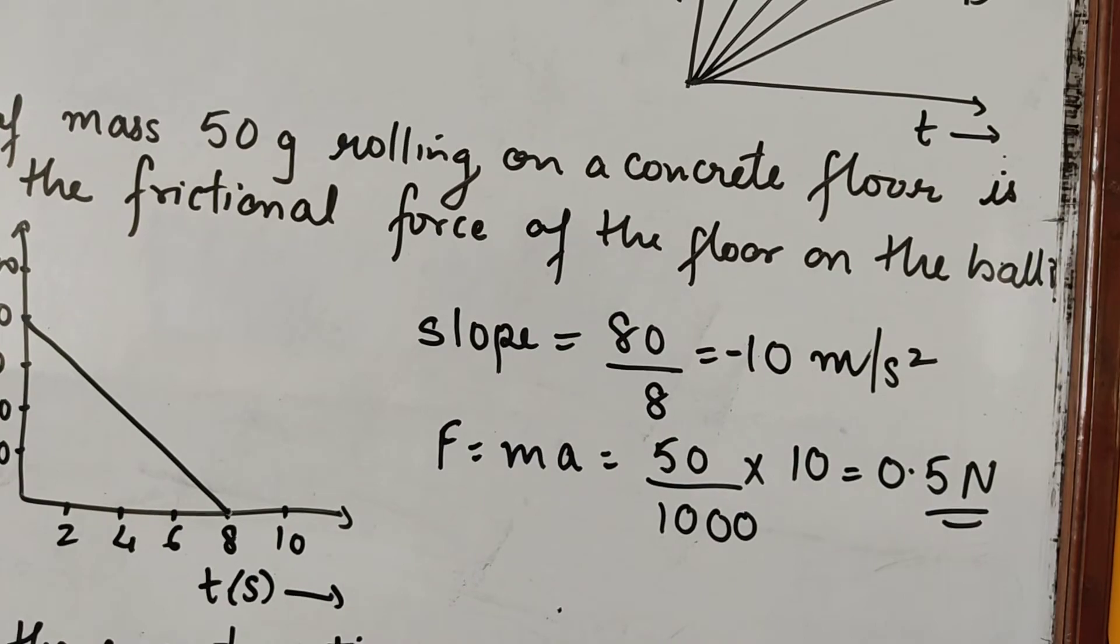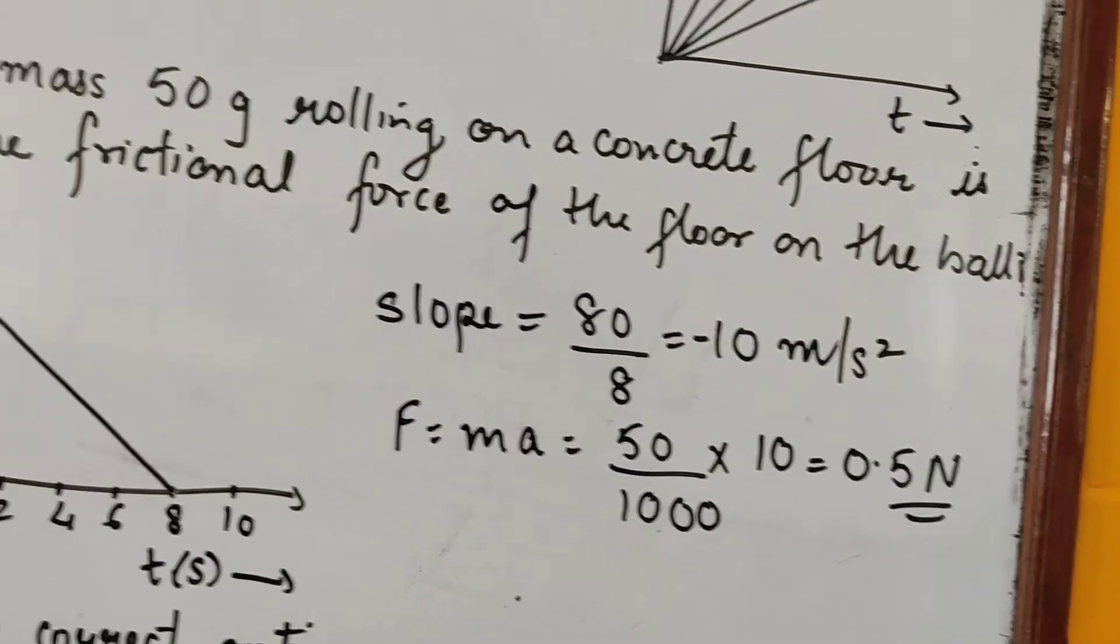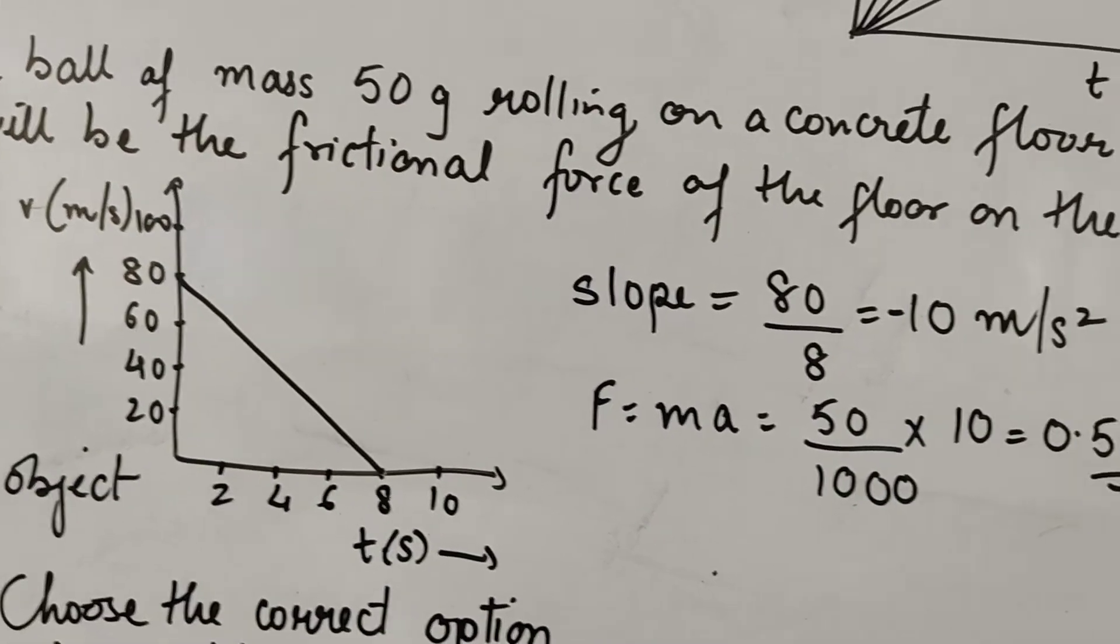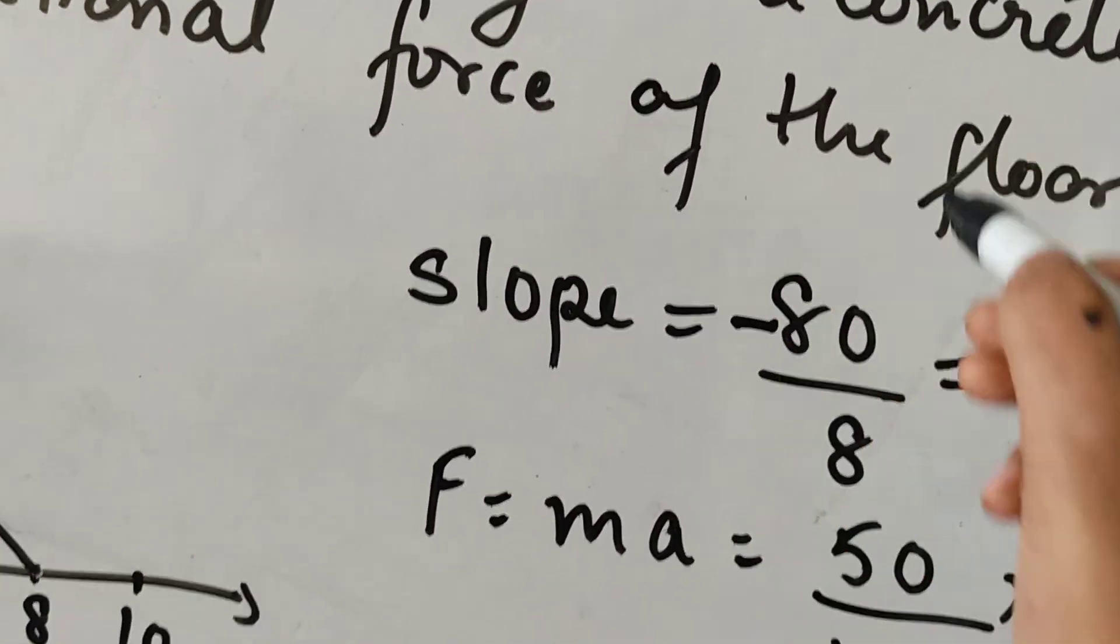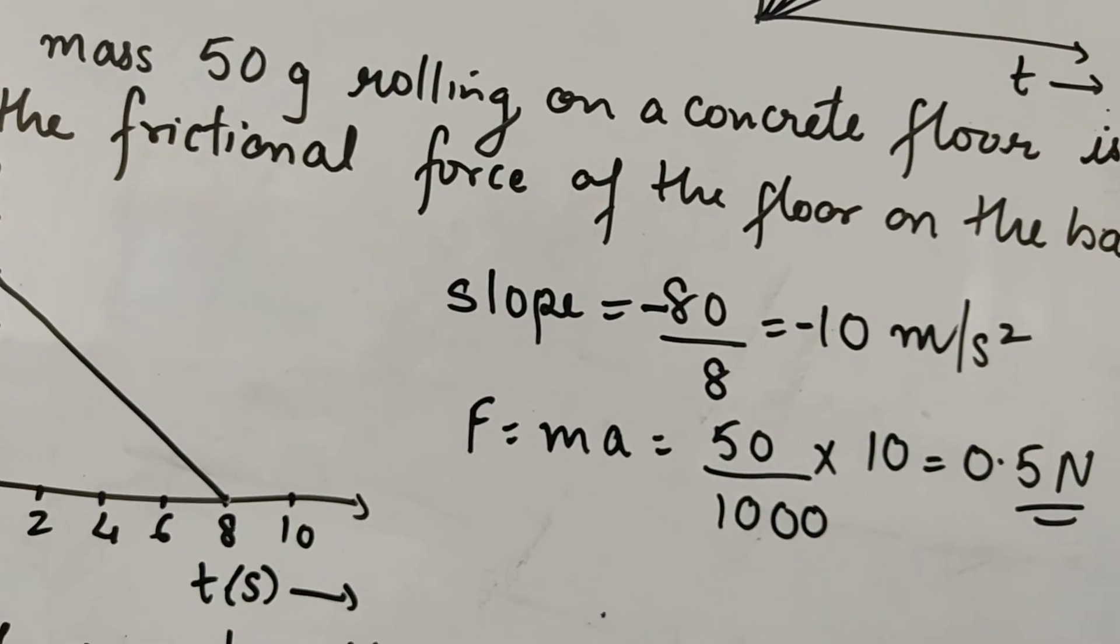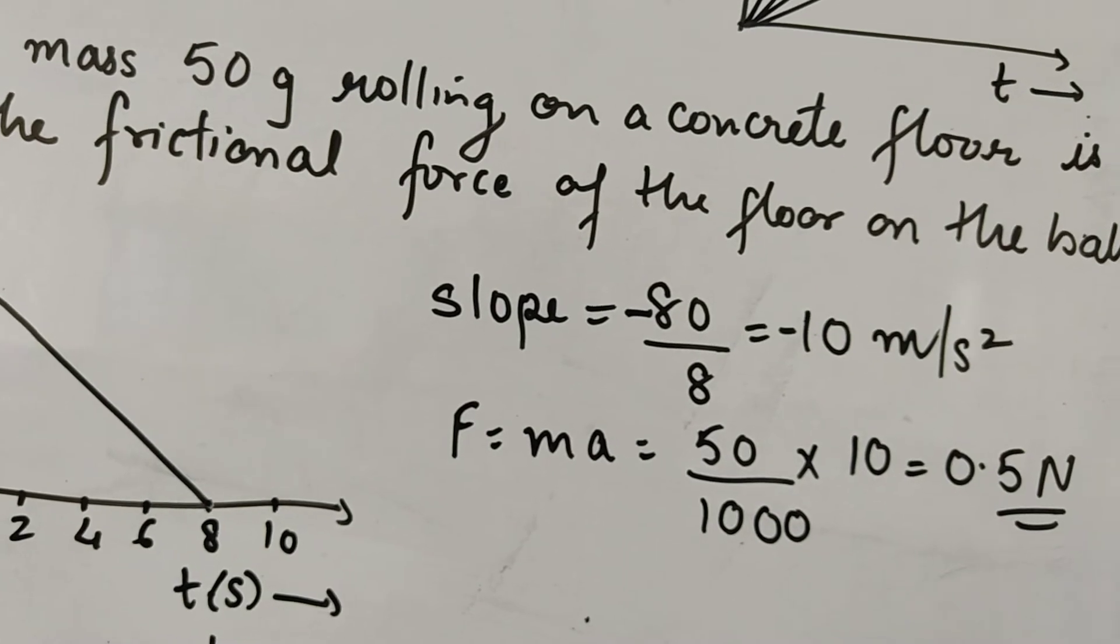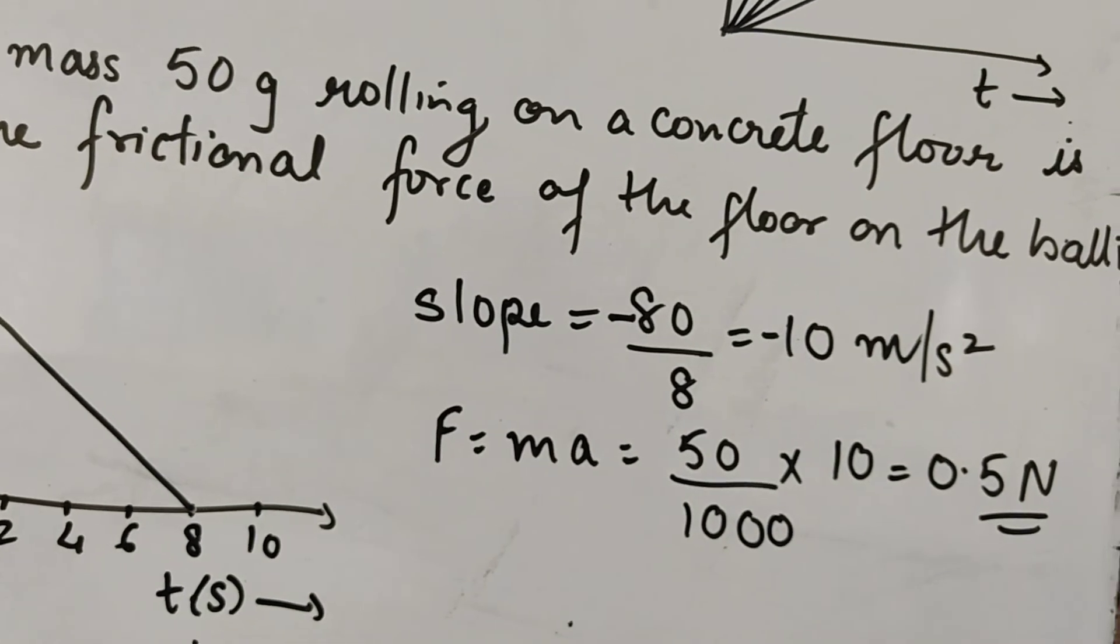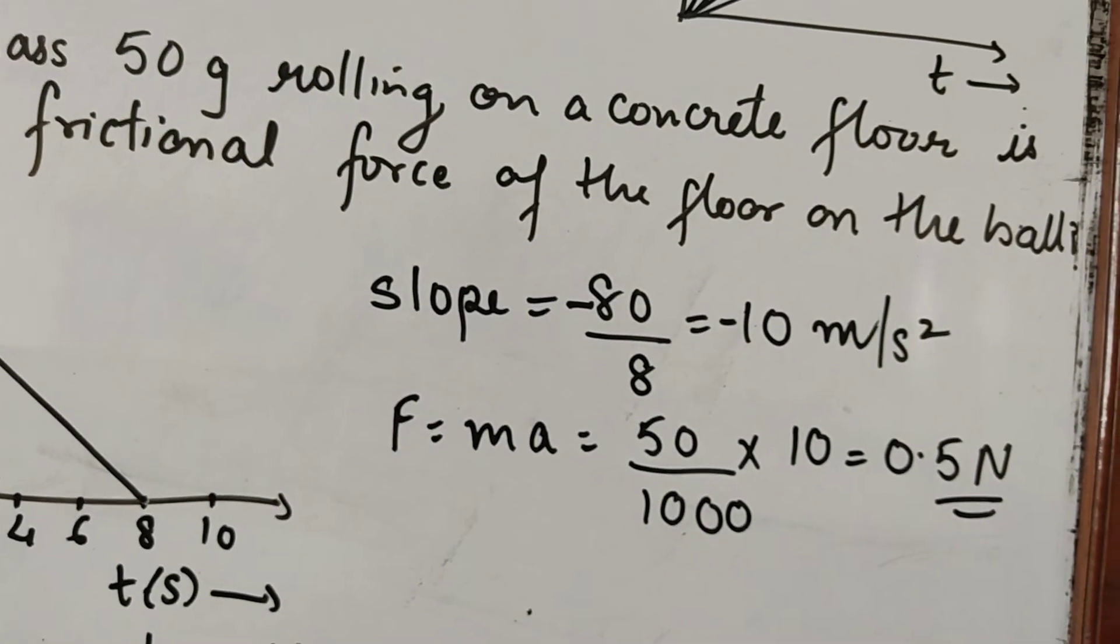So from the graph, we see that we know that slope is Y2 minus Y1 upon X2 minus X1 or in this case, we can say perpendicular upon base. When we see the triangle formed on this graph, we can take perpendicular upon base gives us slope. It means 80 divided by 8, 80 meter per second divided by 8 second, okay? So this is our slope which is nothing but acceleration.